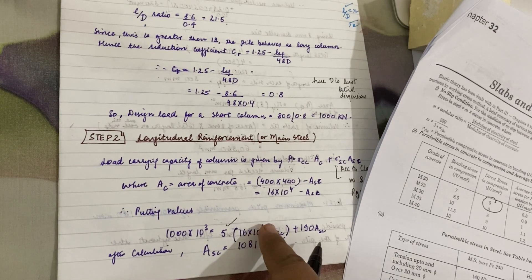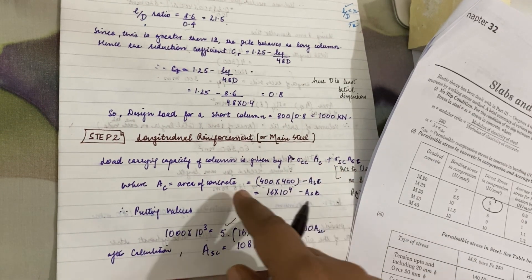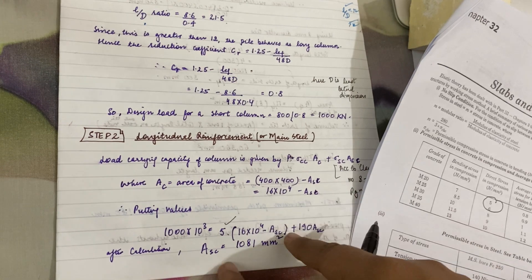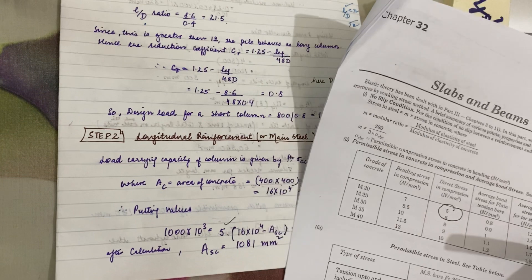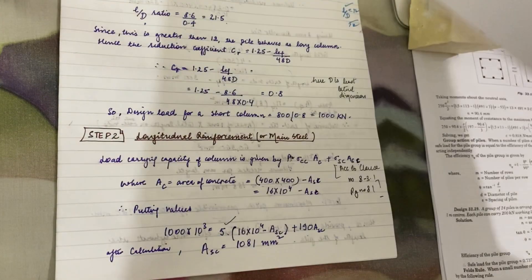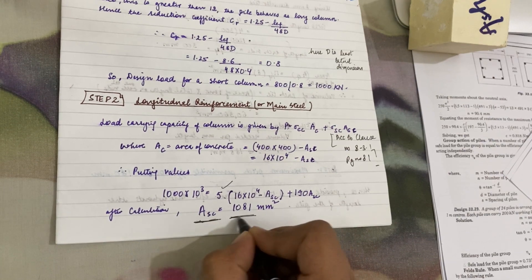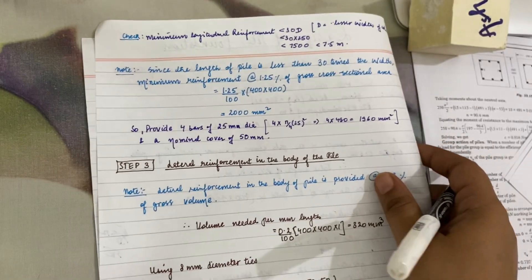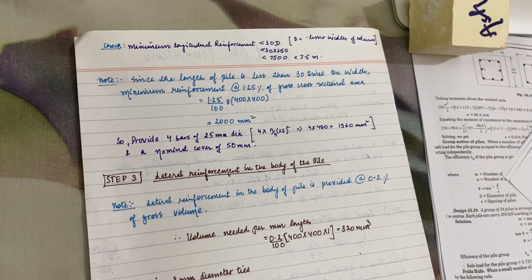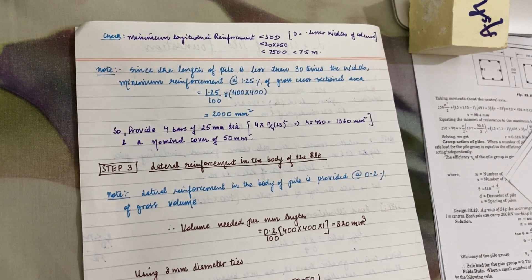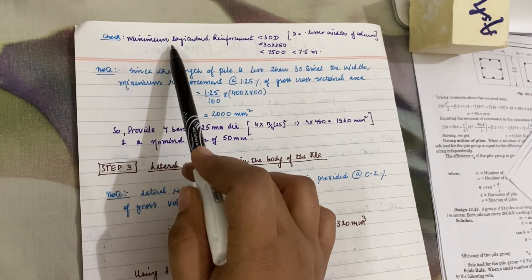For M20 concrete, σ_cc = 5 N/mm². Area of concrete A_c = (B × D) − A_sc = (400 × 400) − A_sc = 16 × 10⁴ − A_sc. For Fe415 steel, σ_sc = 190 N/mm². Putting all values into the formula, the area of steel in compression A_sc comes out to be 1081 mm².